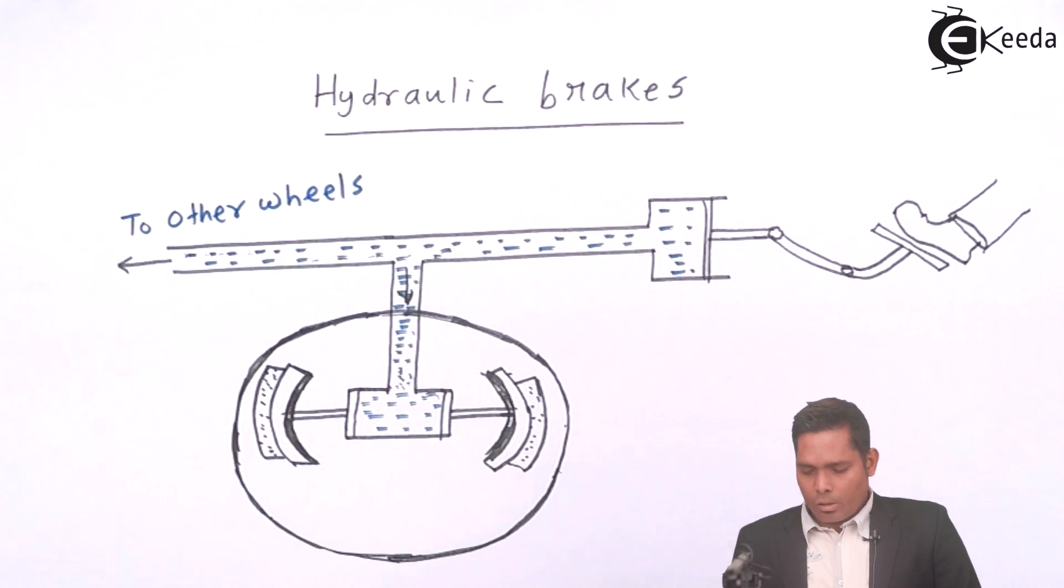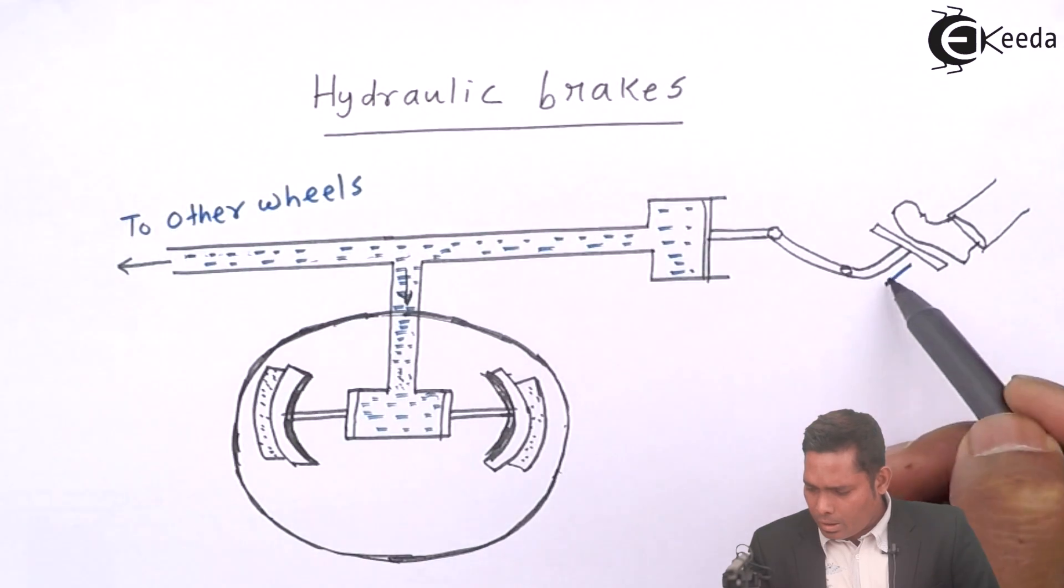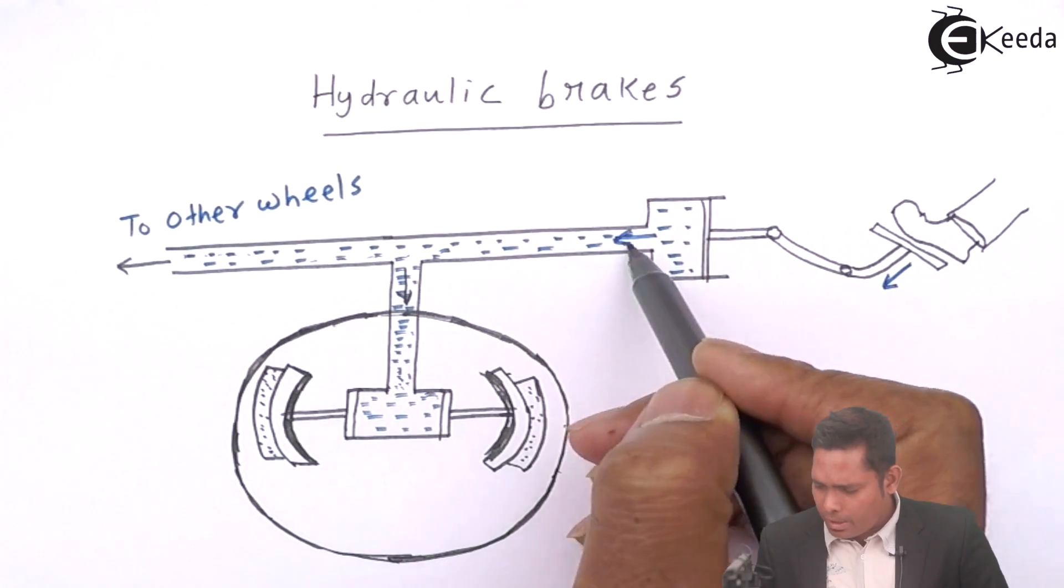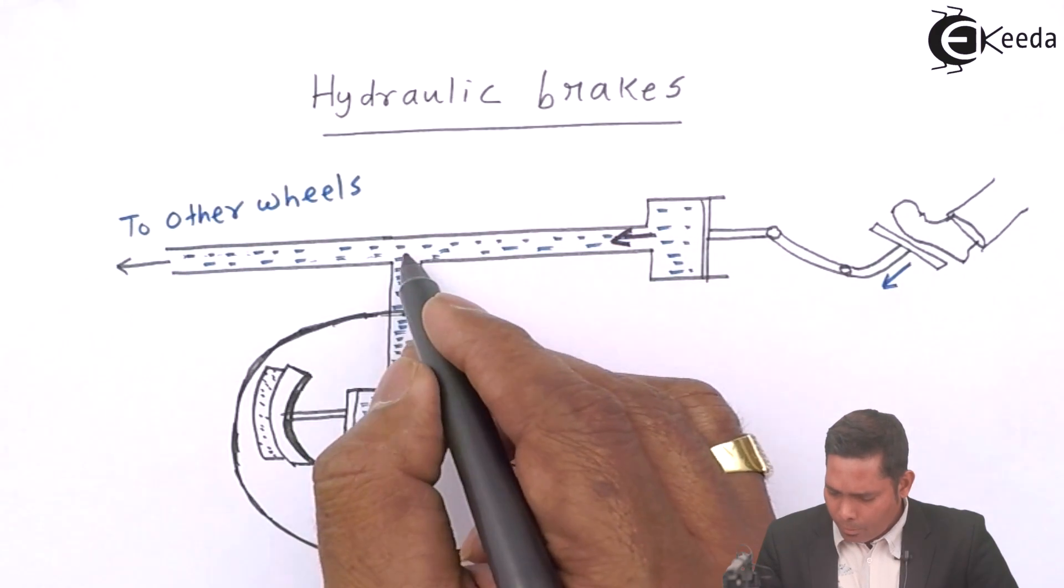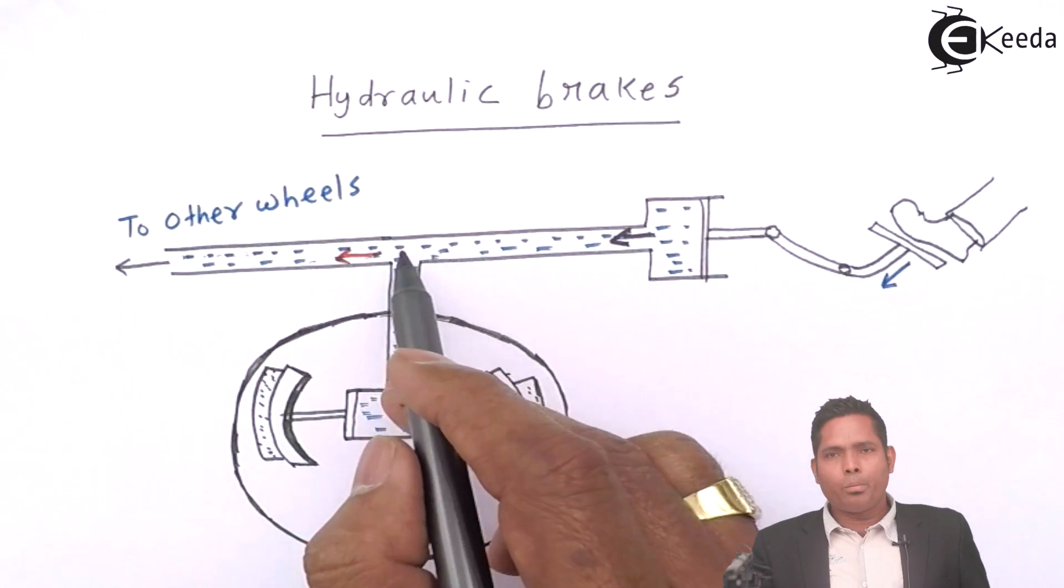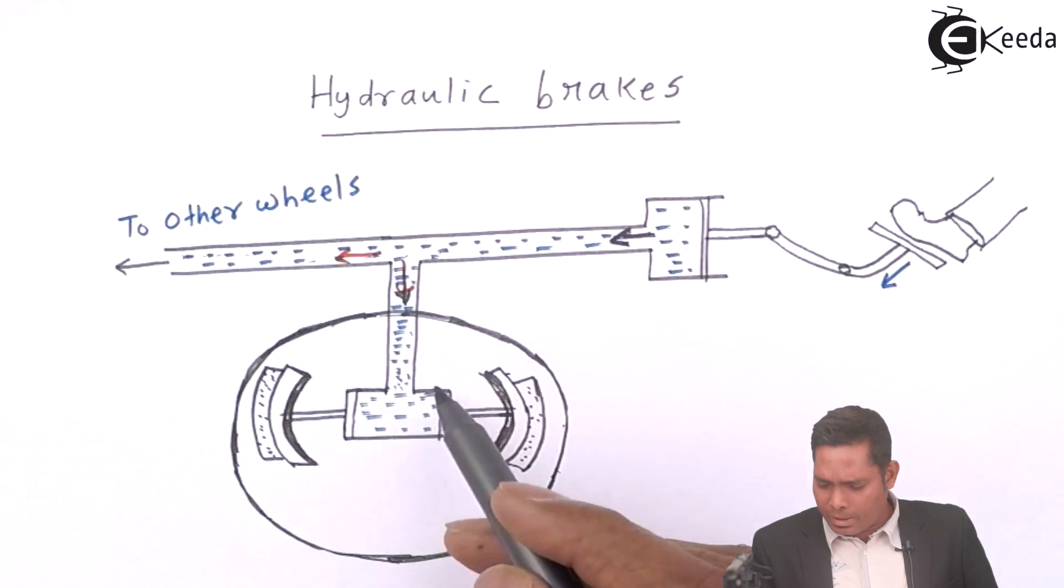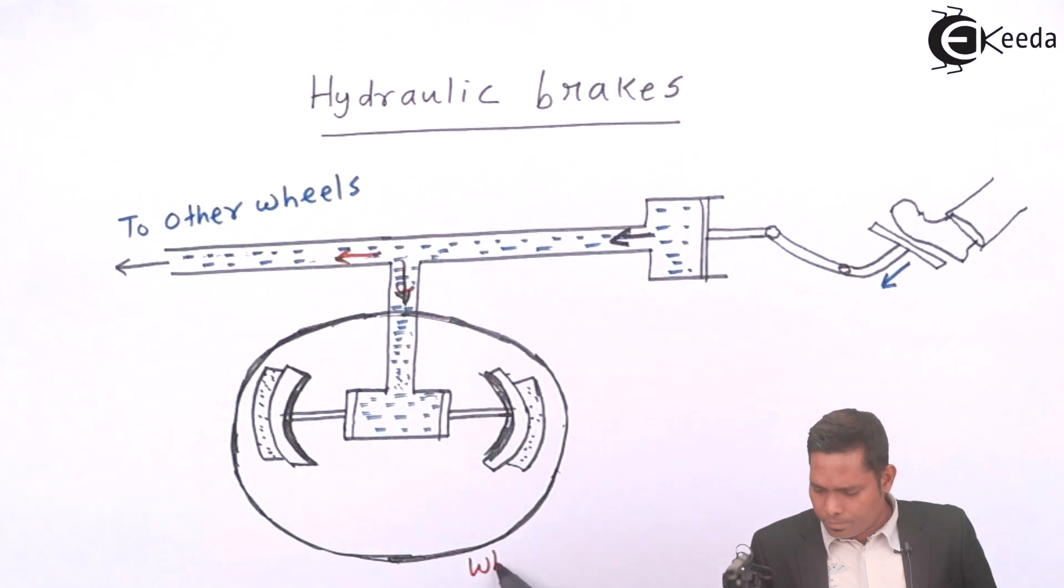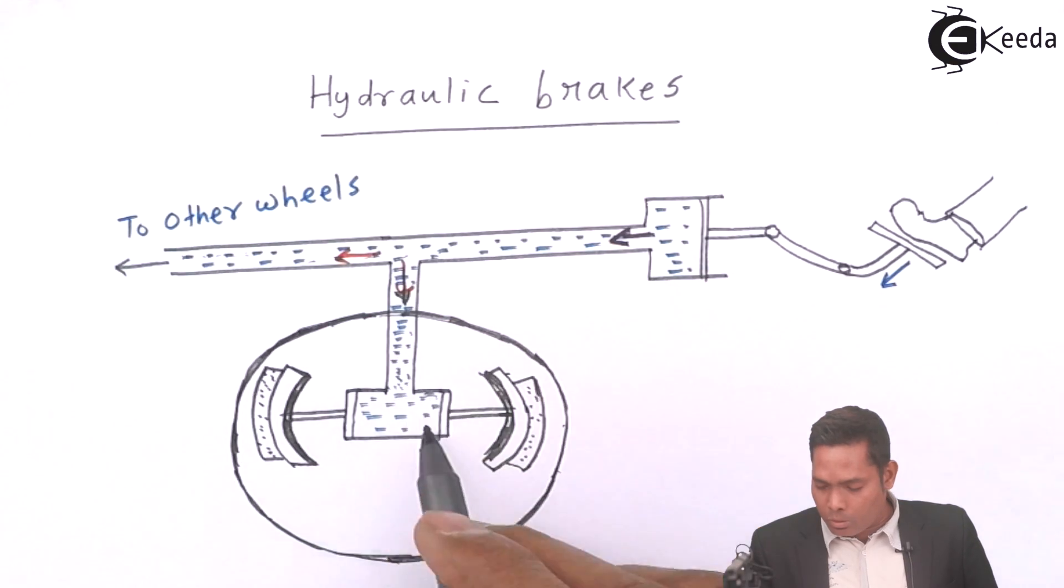Which is actually so by pressing this, this liquid will move into this side, move in this direction. And by this point it has got a junction so some oil will move towards the other wheel. This is the wheel and this oil coming down to this cylinder.